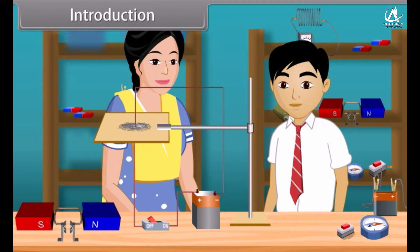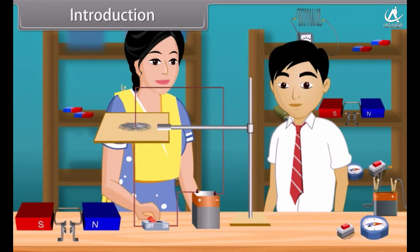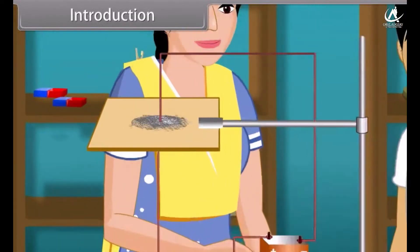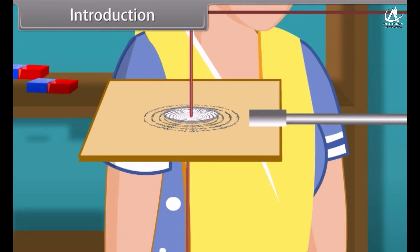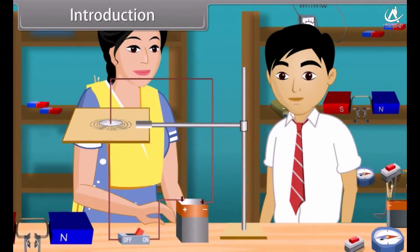After setting up the arrangement, she switches on the circuit. When she switches on, some movement is shown in the iron dust particles and they start arranging in a concentric circles pattern. She performed this experiment to show you the magnetic effect of current. You saw the iron dust particles arranged into the concentric circle pattern due to the magnetic field generated by the electric current.